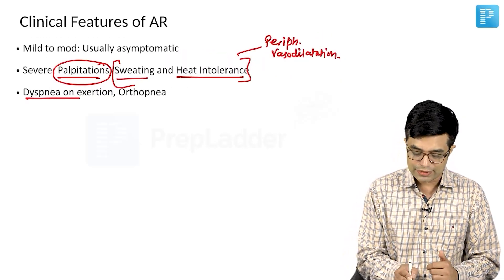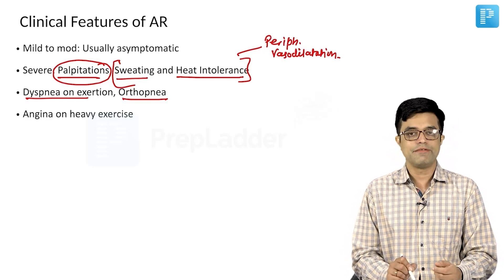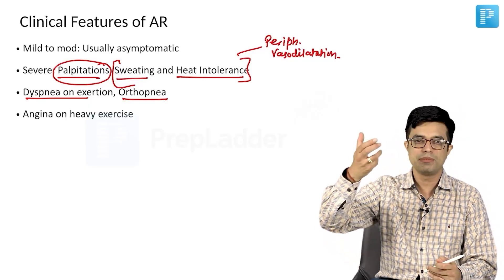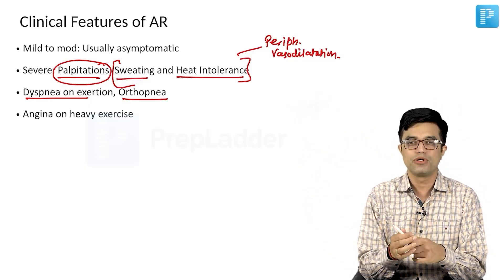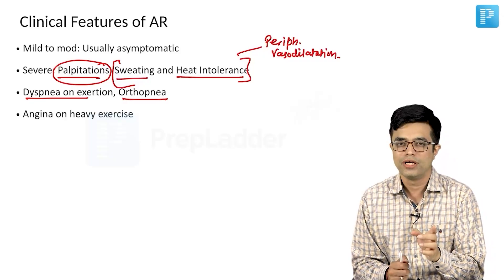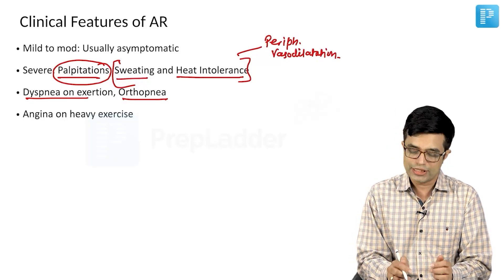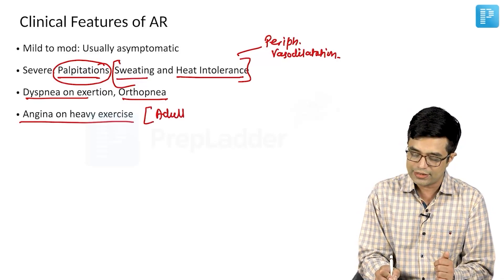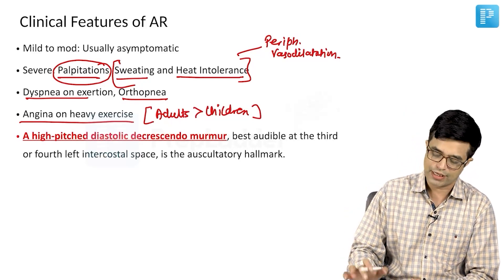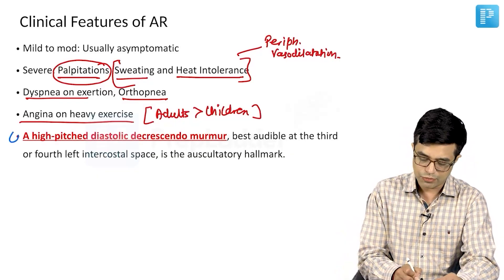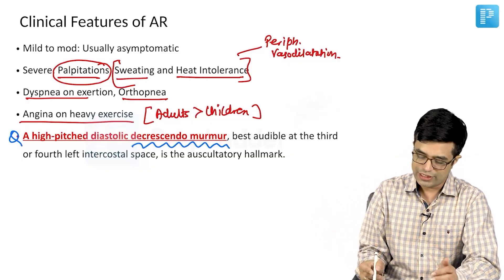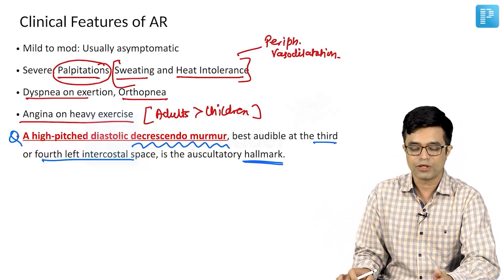As disease progresses, dyspnea on exertion and orthopnea also develop. Angina may happen on heavy exercise because diastolic output is relatively less — though this is more common in adults than in children and can be skipped for pediatric super-speciality exams. The murmur of aortic regurgitation is a potential MCQ point: it is a high-pitched diastolic decrescendo murmur, best audible at the third or fourth left intercostal space, and is the auscultatory hallmark of these patients.